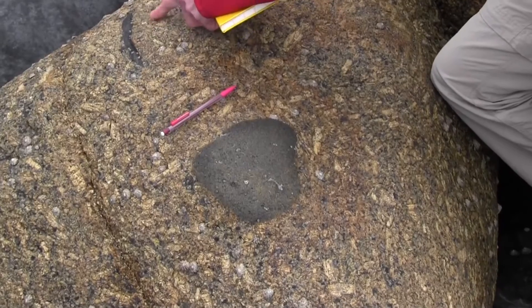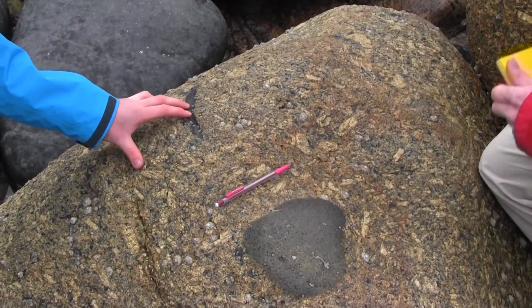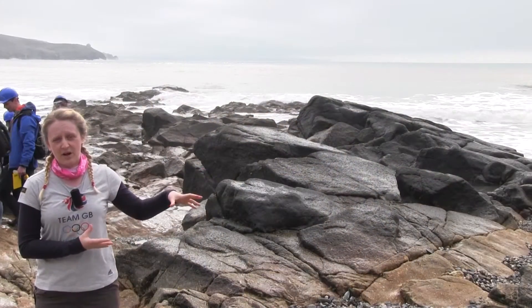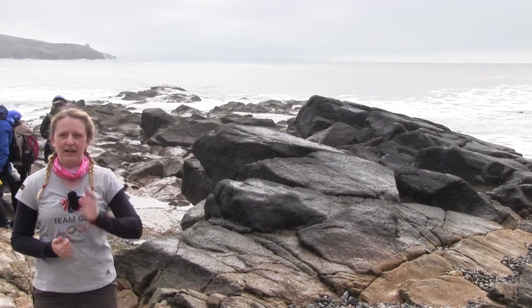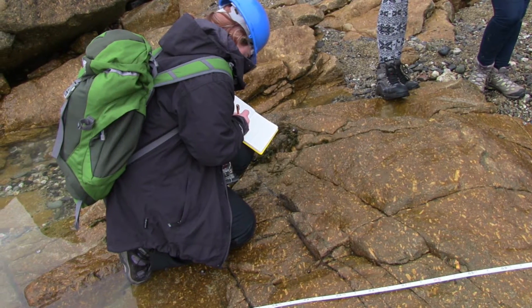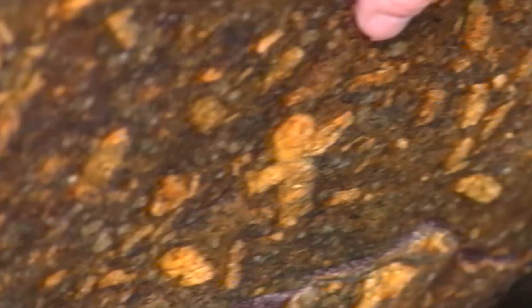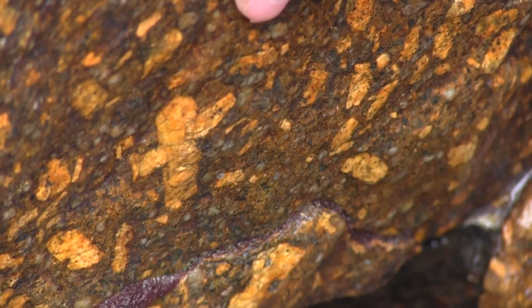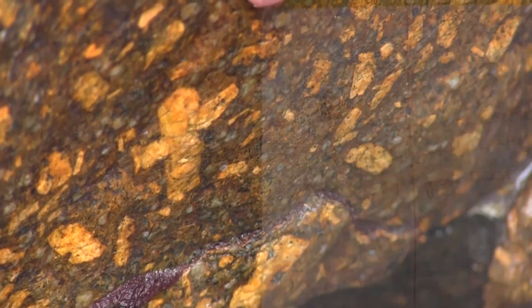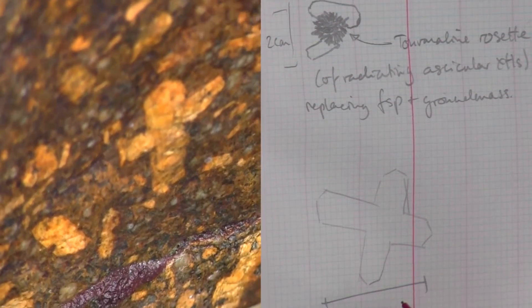As they work their way across the dike they're going to look at changes in mineralogy and texture. There are large phenocrysts of feldspar in this rock, so they're going to look at what size they are, whether they change in size, whether they have a preferred orientation or are randomly orientated, and whether that changes as they go from the edge to the centre of the dike. There are also some interesting twins in these which we hope they find.